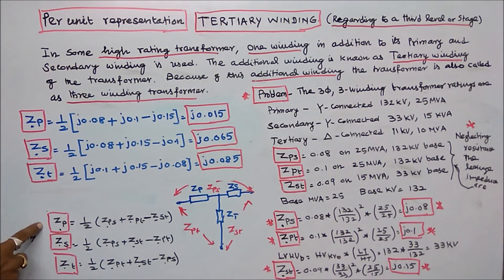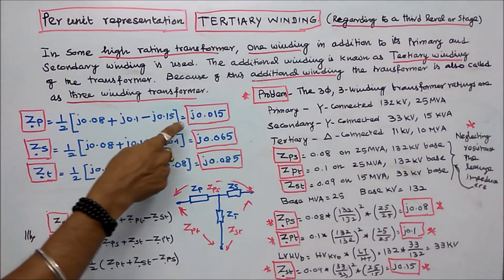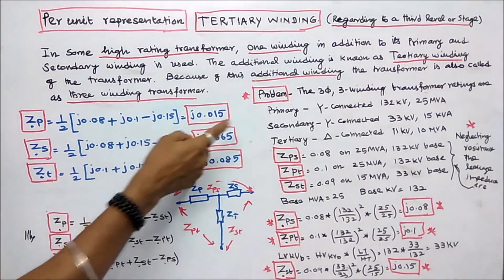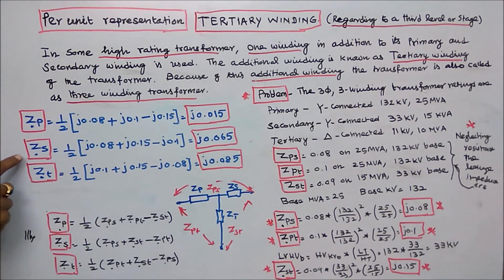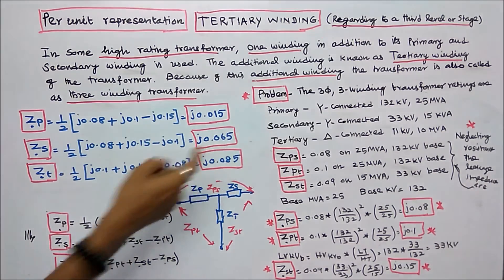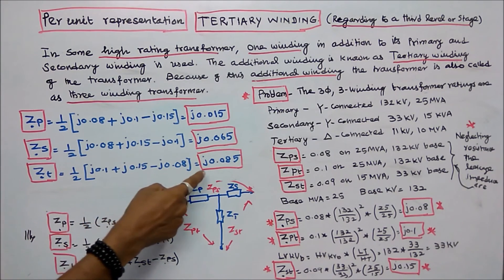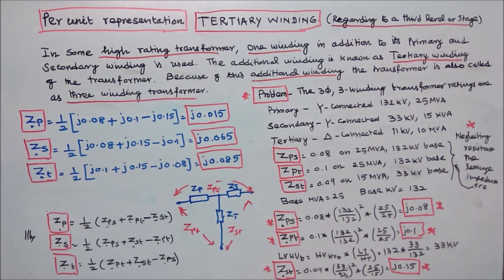By applying the formulas for individual winding impedances, the per unit impedance of primary is j0.015, the per unit impedance of secondary is j0.065, and the per unit impedance of tertiary winding is j0.085. With this, I conclude my lecture. Thanks for listening.